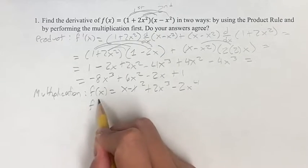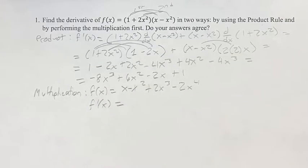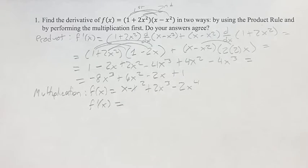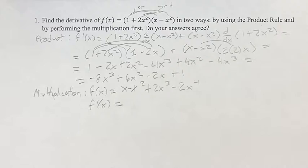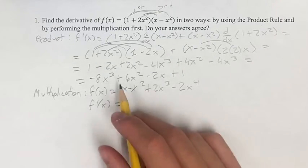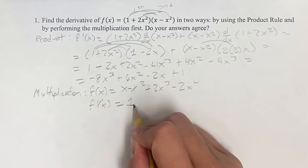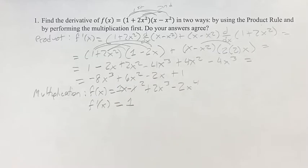Okay, so the derivative we are going to find by going one by one through all these terms and taking the derivative of each. Again, if you just have a term with x in it, the derivative is just the coefficient, which in this case is 1, which is always there if there's no coefficient, right?